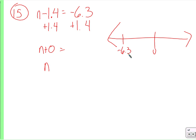We're going to add 1.4. What does it look like to add 1.4 on the number line? We're adding 1.4, and that gets us to here, which is negative 4.9. n equals negative 4.9. And so does n plus zero. Both equal negative 4.9. That's problem 15. Next question.